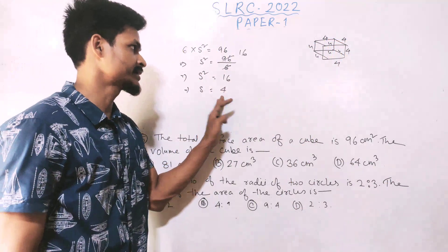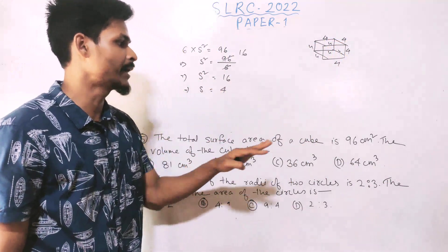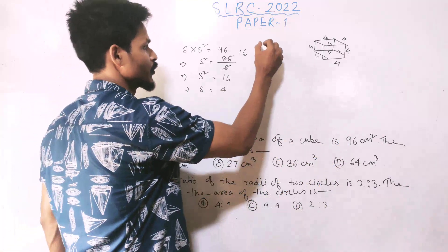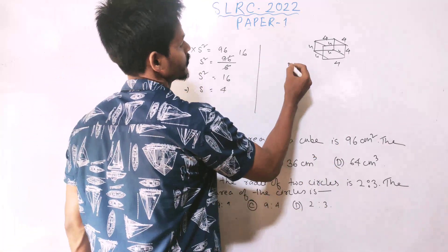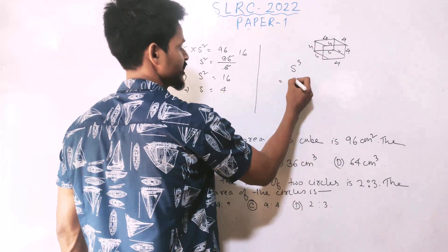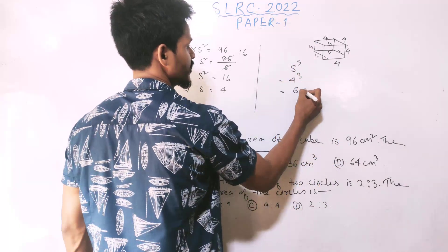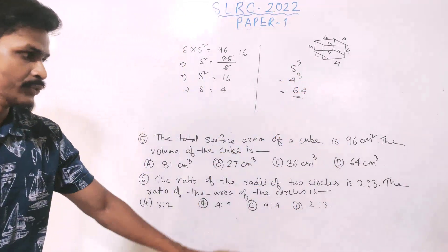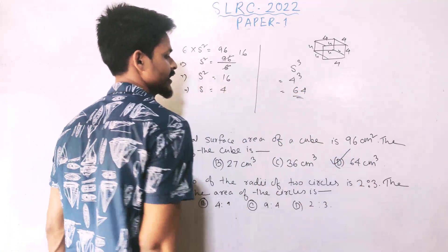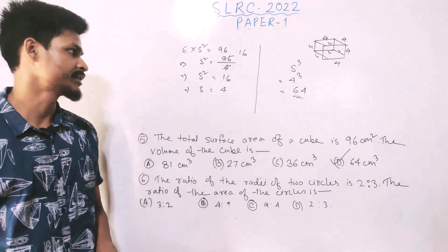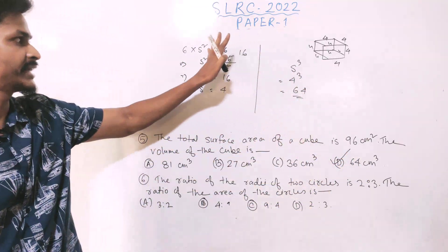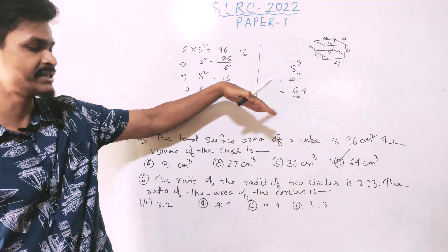The volume of the cube uses the formula side cubed. So volume equals 4 cubed equals 64. The answer is 64 centimeter cube. The unit is cm³.